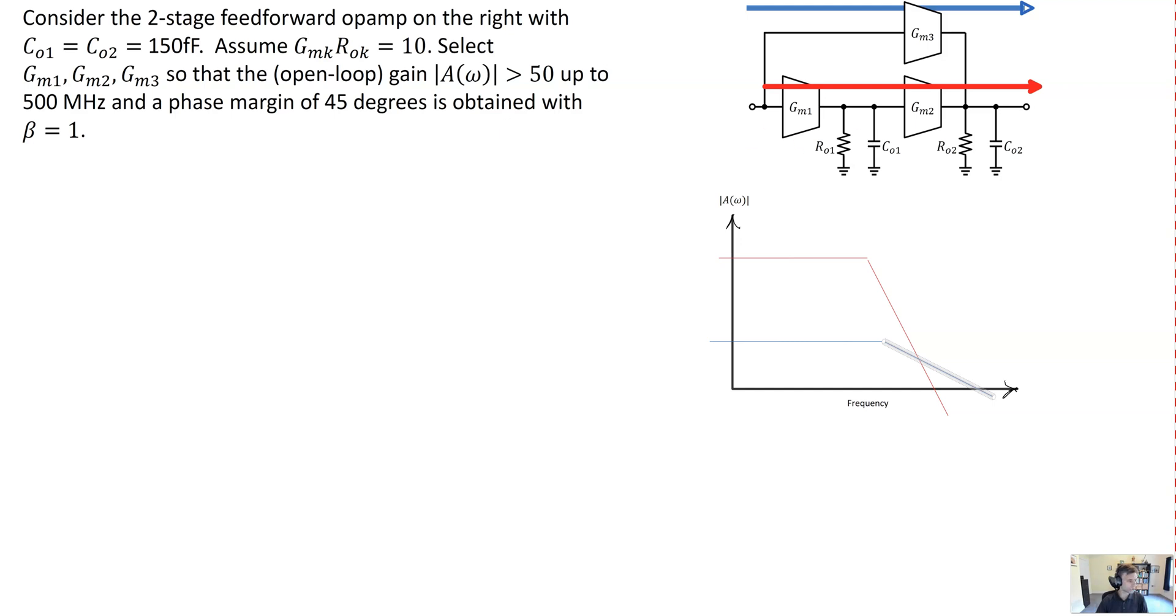So how do we ensure that? Well, we've got the capacitances at those nodes. There are 150 femtofarads each. So we've simply got to select the output resistances RO1 and RO2, so that the time constant at these two nodes each corresponds to a pole at 500 megahertz. So there's the pole frequency, the capacitance, and we can calculate the required resistance.